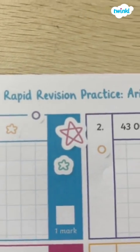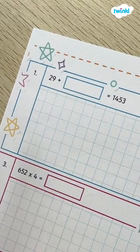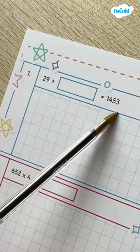Here's how I would solve the SATS rapid revision practice questions for arithmetic. Question 1: 29 plus something equals 1453.